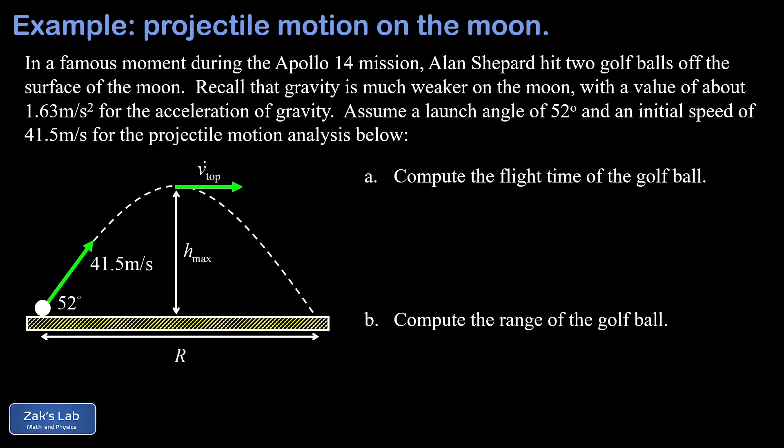First, we're going to get the flight time and then the range R, that's the horizontal distance traveled by the ball. Then we're going to focus on the top of the trajectory by finding the maximum height of the ball and the speed of the ball at the top.